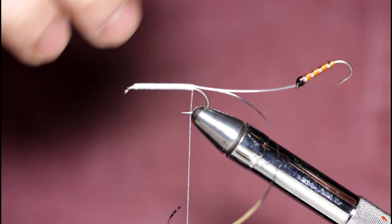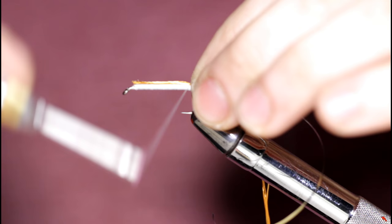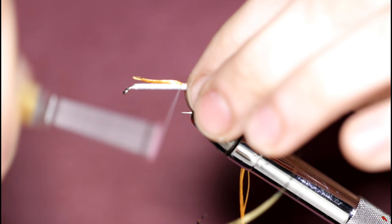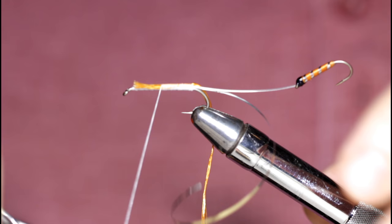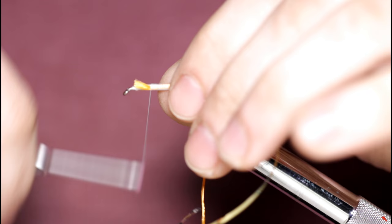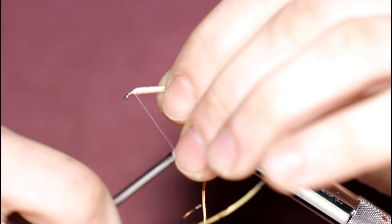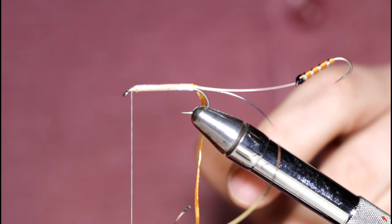And I'm going to tie this in again. Same thing. Same length as the body. Tie in the whole tag end. Try to keep your turns as even as possible if you want to wrap a smooth body. I'll throw a half hitch in.